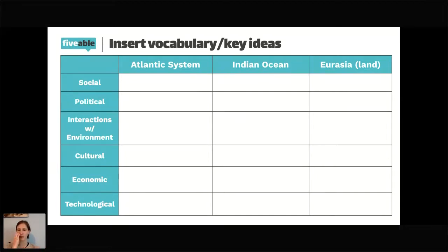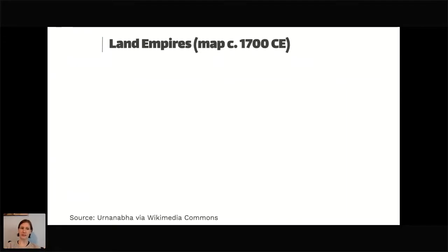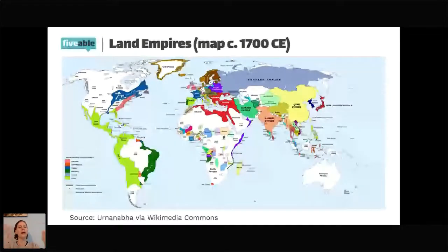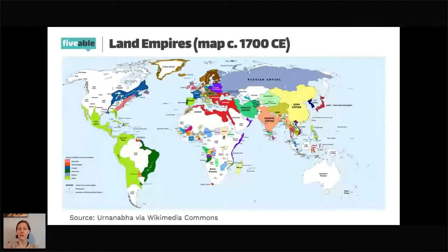I'll pause for a moment and let you look at the chart — I'm going to show it again at the end of the stream. The slides for tonight's stream will be available under resources if you need to take a look. So let's start by talking about the land empires. I've got a map here showing global empires circa 1700 — near the end of the time period we're studying — with both land and maritime empires.